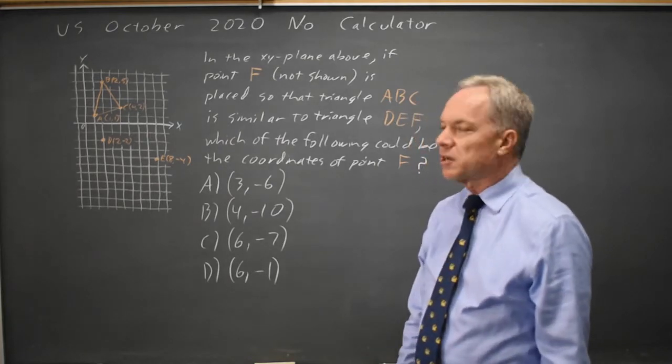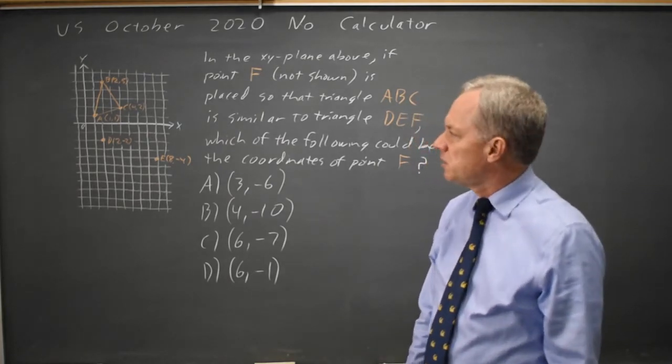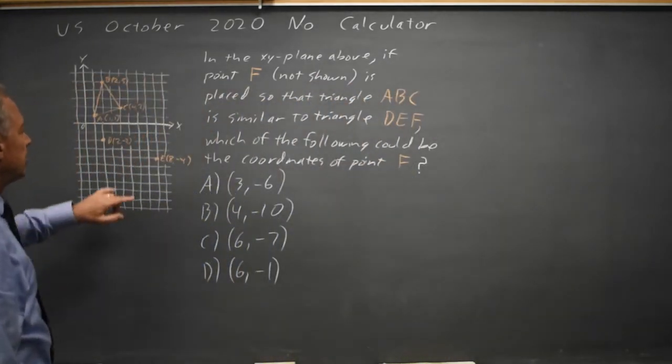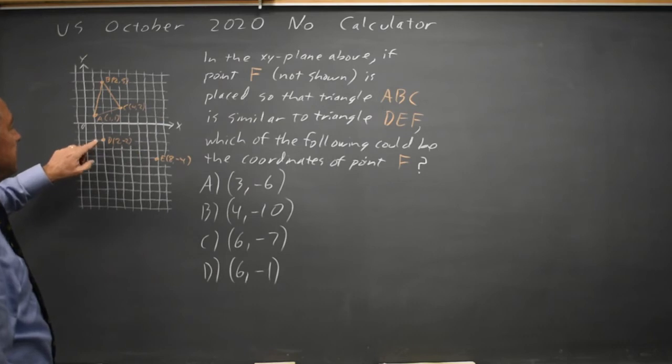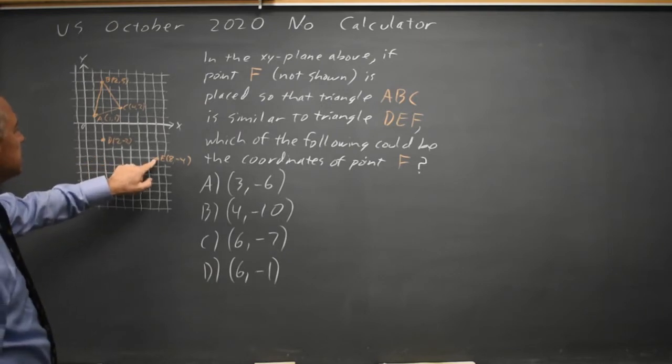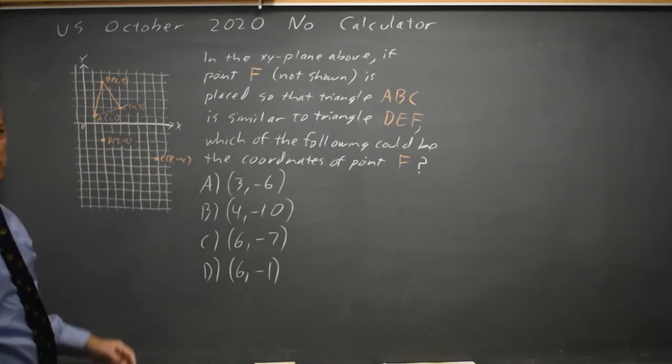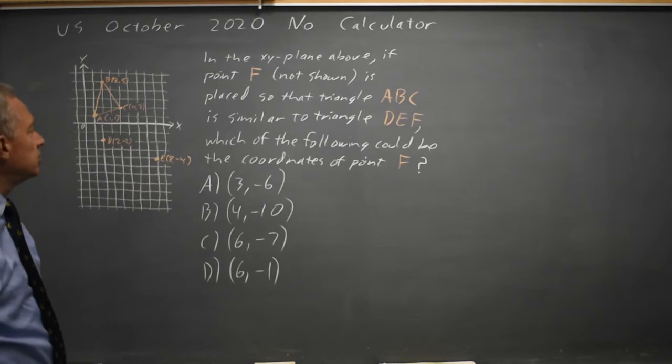This is awkward because they're not oriented the same way. You can see that much. So you have to guess which way the similarity lies. From point D to point E you go down 2 and to the right 6. From point A to point C you go up 1 and to the right 3. So it looks like we could do this with a 2 to 1 ratio and reflecting.